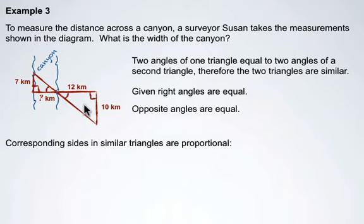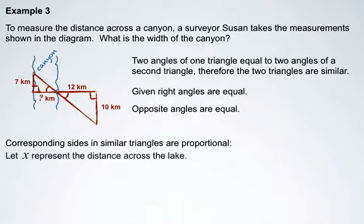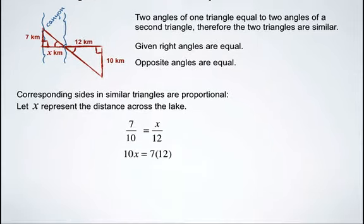Now since they're similar triangles, we know that corresponding sides in those similar triangles are proportional. If we let X represent the distance across the lake that she's trying to calculate, we can set up the following proportion. Seven kilometers in this triangle compared to ten kilometers in the corresponding triangle is going to be equal to X in the first triangle over 12 in the second triangle. And if we cross multiply, we end up with 10 times X and 7 times 12.